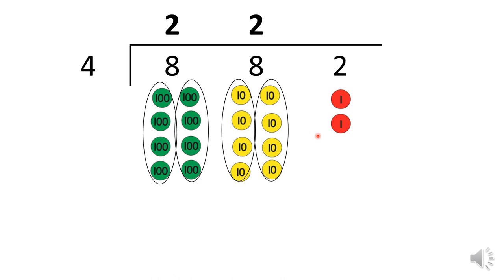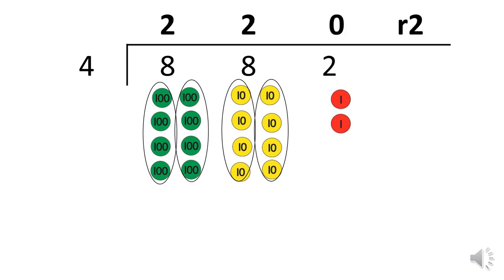How many groups of four can I make out of two? I can't make any groups, so I put that here by showing zero. But I still have two left over, so I put the remainder up here — remainder two. So 882 divided by four is 220, remainder two.